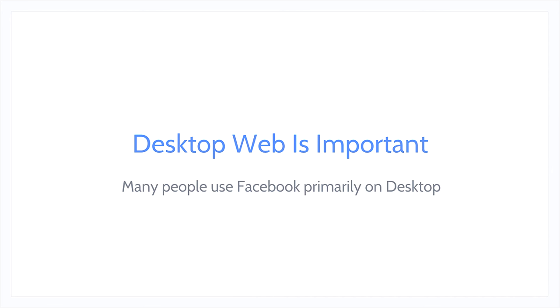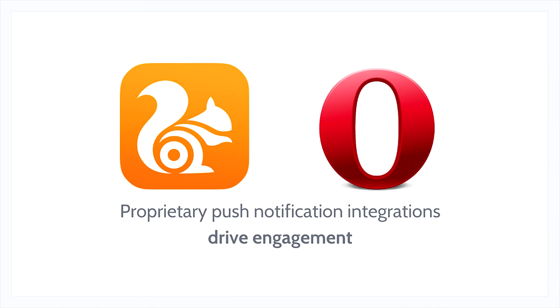The desktop web is also an area of continued strategic importance to Facebook. Many people still use it as their primary way to interact with Facebook. There are many features on native we haven't been able to bring to the web — up until recently, the web has been at a huge disadvantage, especially for re-engagement. Push notifications have been very impactful on native for a long time. We implemented a proprietary push notification integration with UC and Opera Mini, and we know that push is great — people want it on whichever interface they use most.